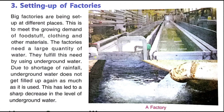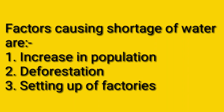It is like a cycle: if there are plants, there will be rainfall; if there is rainfall, groundwater will be collected; if there is groundwater, trees will also grow and all our water requirements will be fulfilled. So these are the three major factors causing the shortage of water: first, population; second, deforestation; and third, setting up of factories.